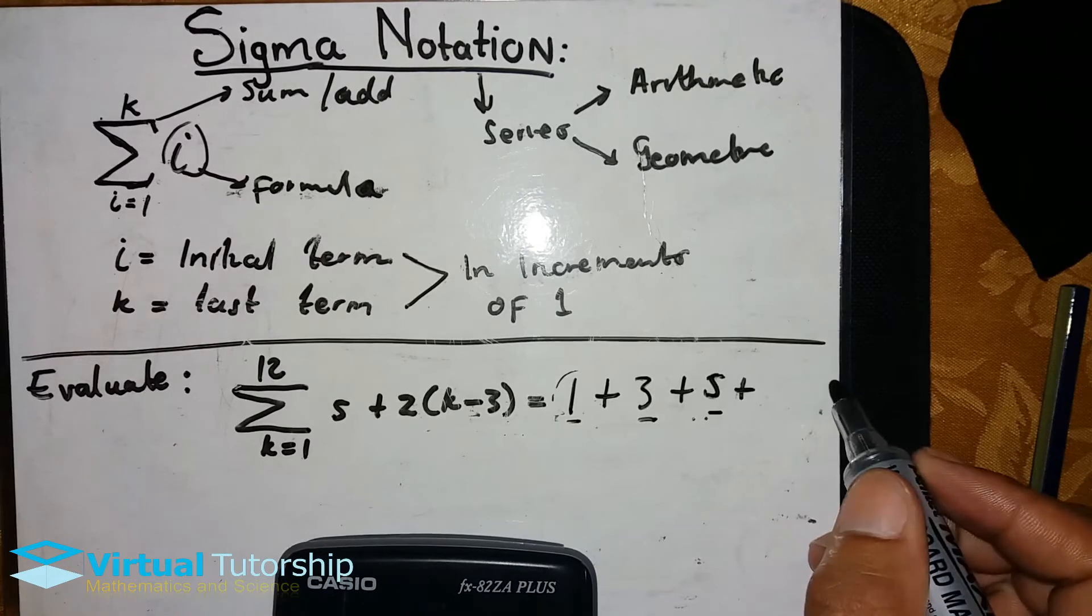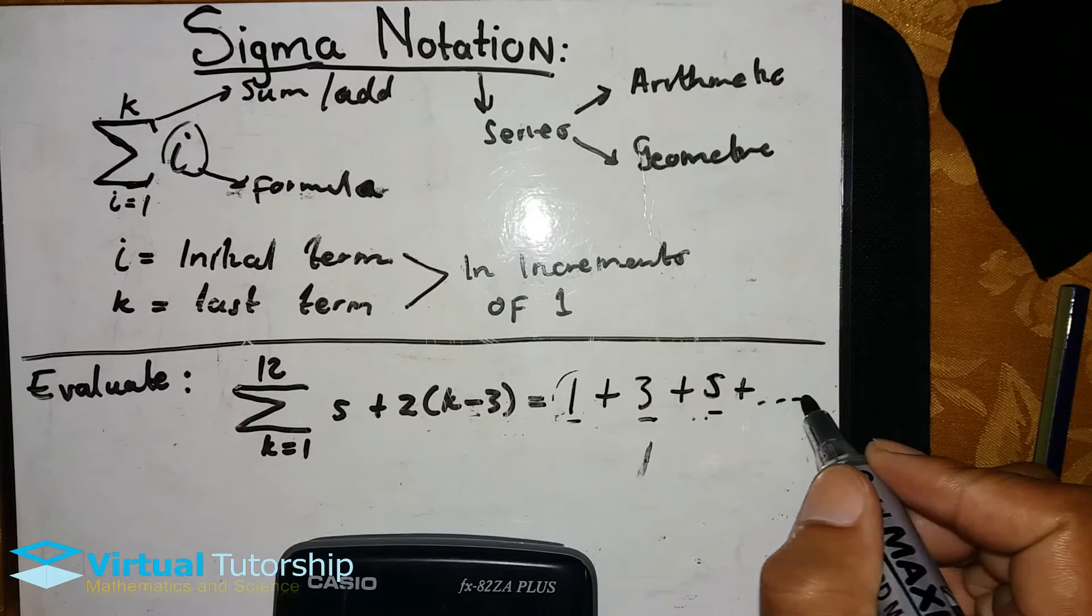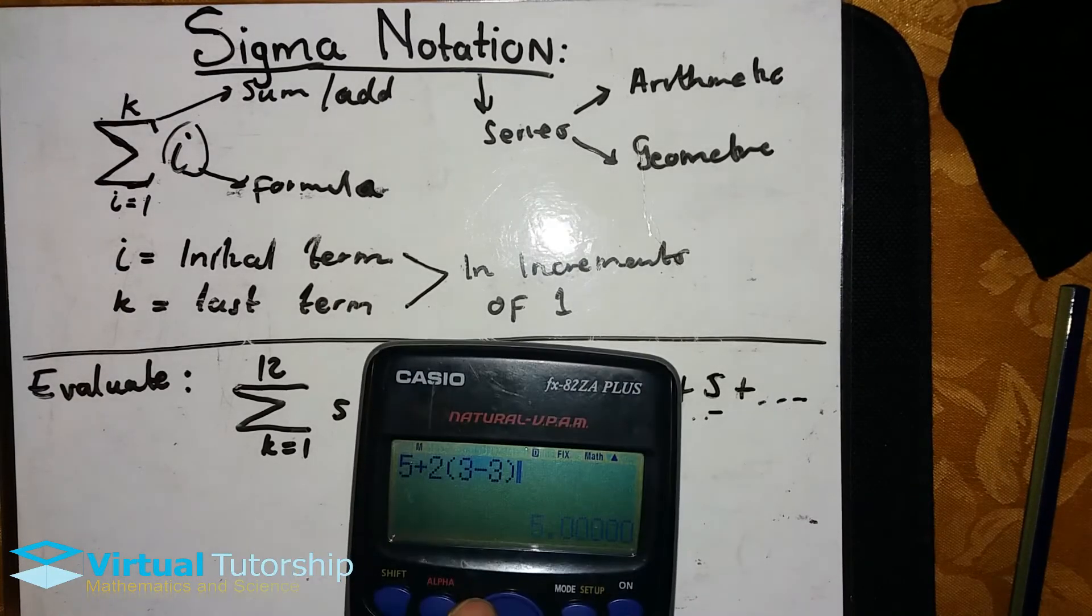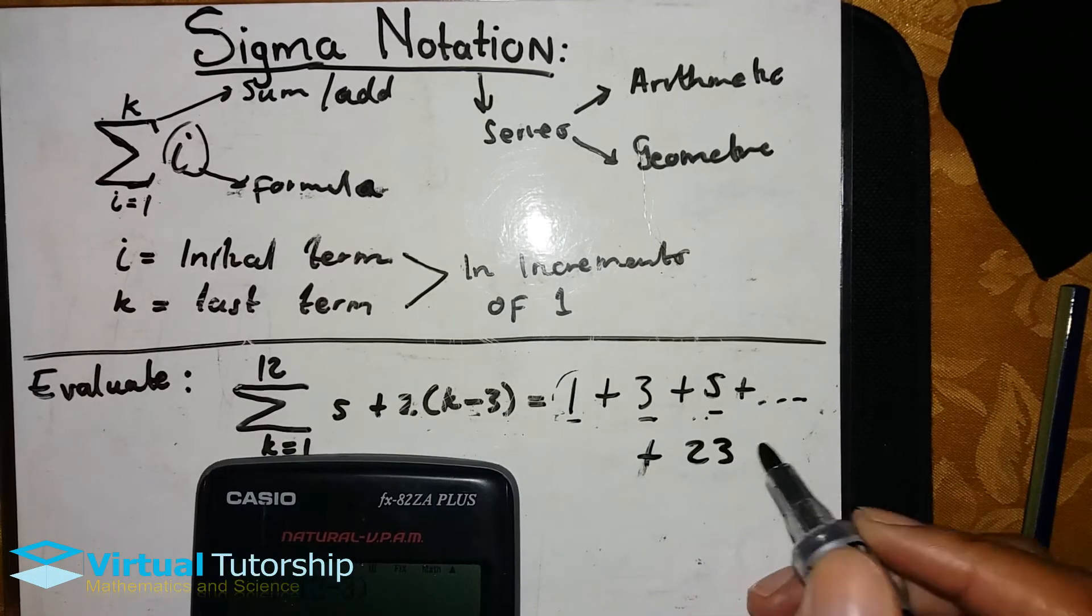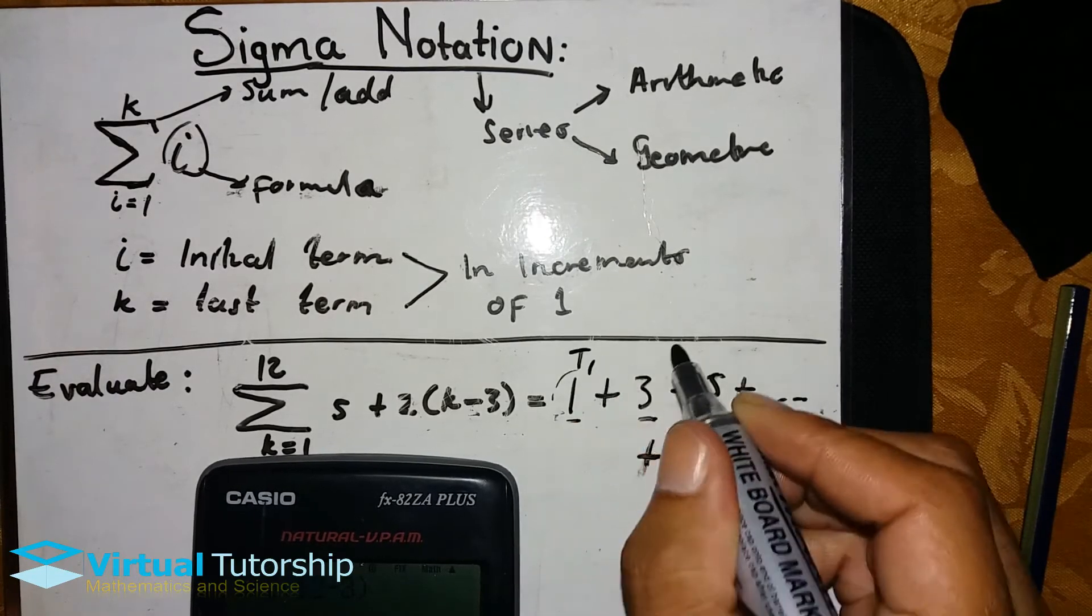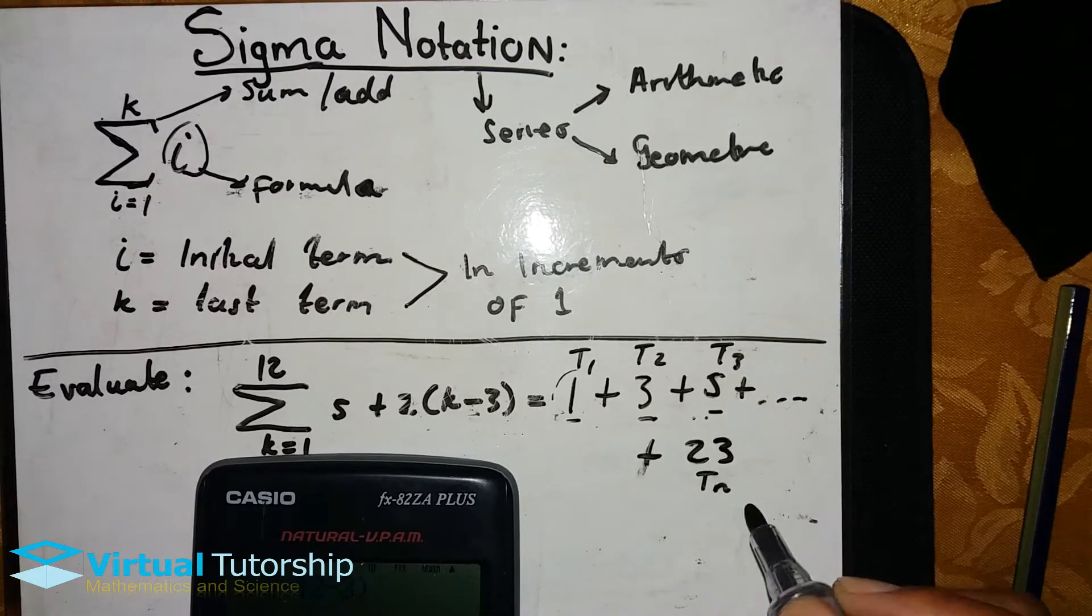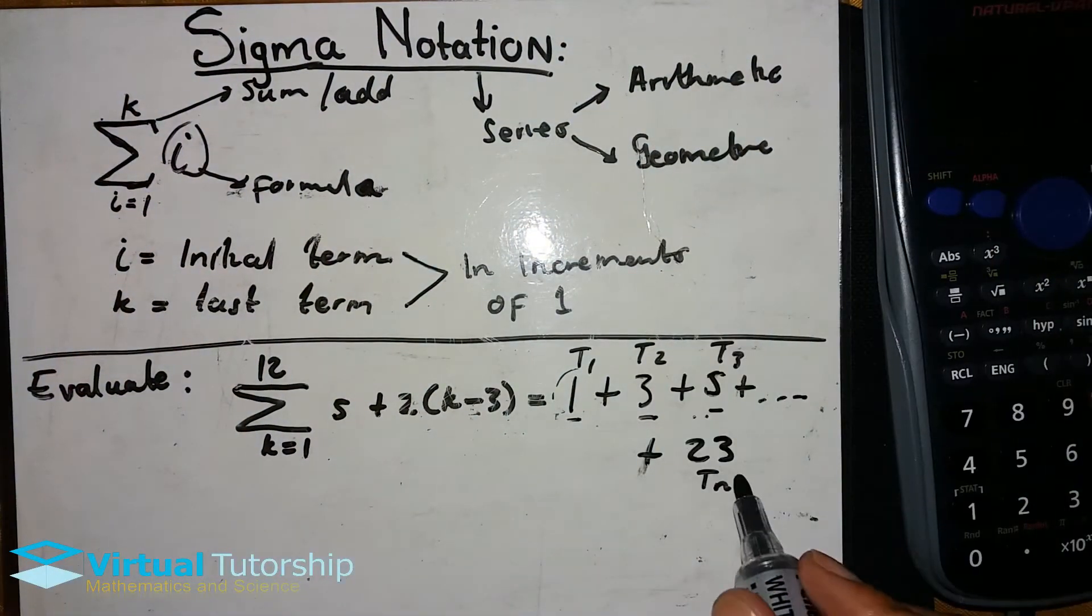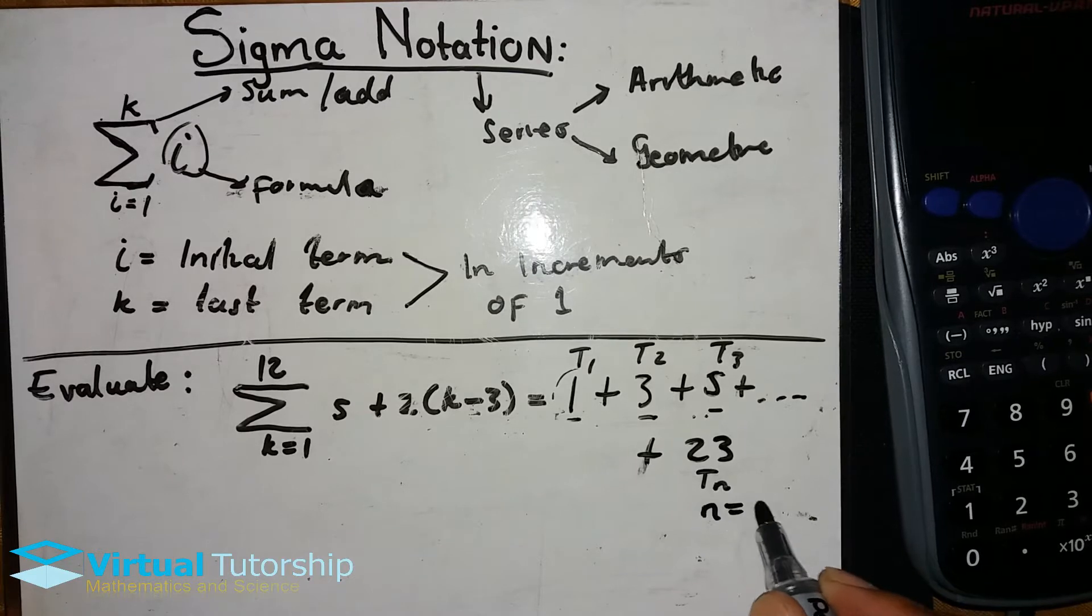We expand all the way up to the last term. The last term is equal to 12, so this is going to be T12. So we have T1, T2, T3, and then the last term which is T_n. This is the last term, and this term n represents the position you're looking for.